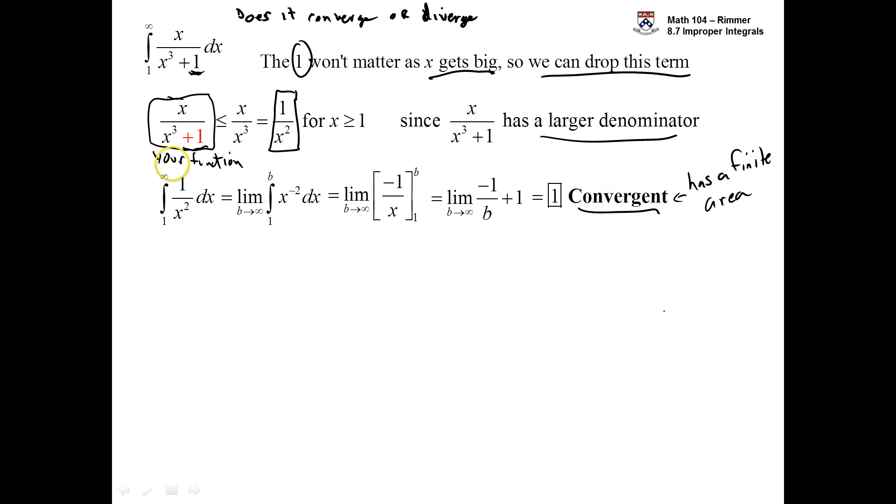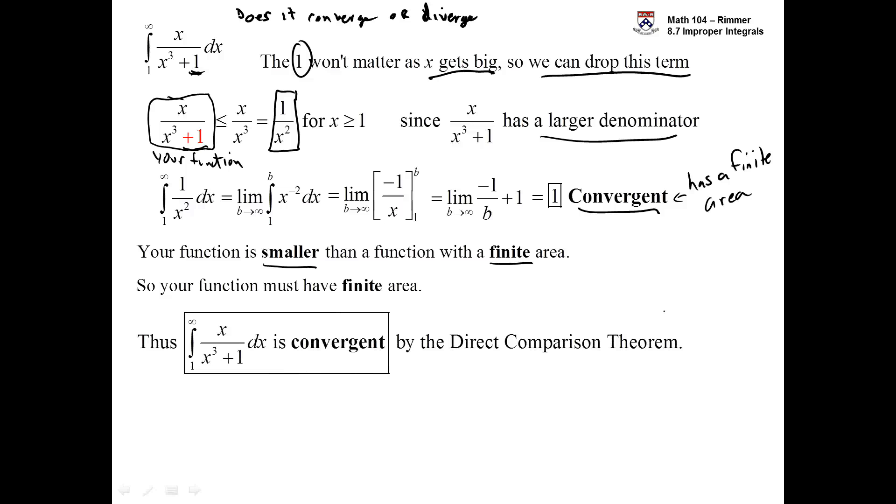So, it turns out then that your function that you were given is smaller than a function that's integral is convergent. So, it has a finite area. This guy has a finite area. Convergent means it has finite area. But it has finite area. Okay. So, your guy is less than something that has finite area. So, then by the direct comparison theorem, your function must also have finite area. And finite area is going to mean that your integral is convergent. And what we're using is the direct comparison theorem.